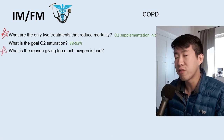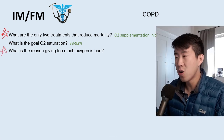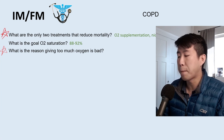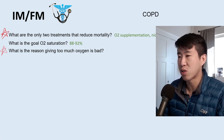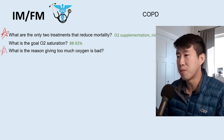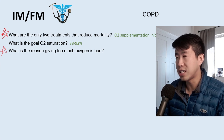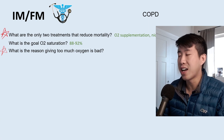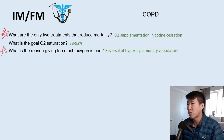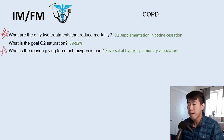Why is too much oxygen bad for COPD patients? A lot of people say it's because COPD patients use hypoxia as a drive for respiratory rate rather than carbon dioxide, so too much oxygen causes decreased respiratory drive. But the real reason is actually reversal of hypoxic pulmonary vasoconstriction. This is going to be on your board and shelf exams and you'll get pimped about it — the real answer is reversal of hypoxic pulmonary vasoconstriction.